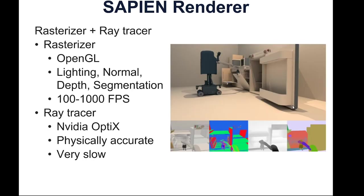Next is the rendering. The renderer in SAPIEN combines a rasterizer and a ray tracer. The rasterizer is coded in OpenGL and provides lighting, normal map, depth, and object segmentation from the camera, running at 100 to 1000 frames per second. The ray tracer, coded with NVIDIA OptiX, is more physically accurate and produces more realistic results, but is very slow — running at only one frame per second or even 10 seconds per frame.